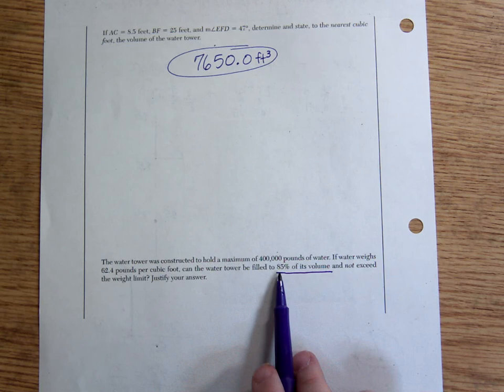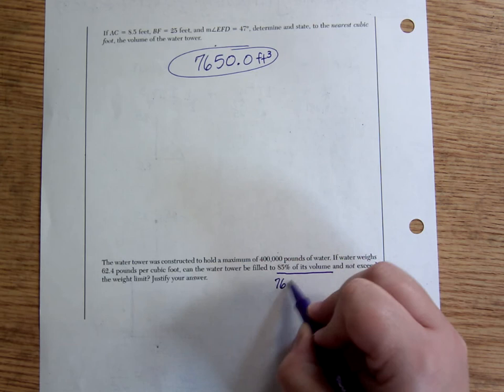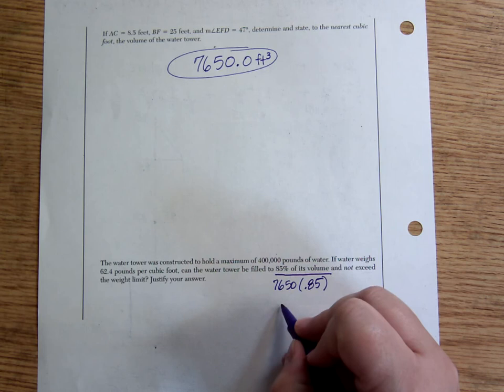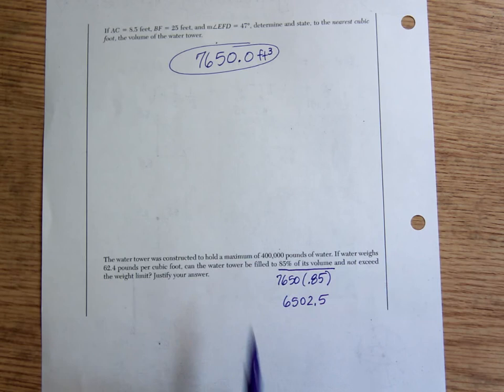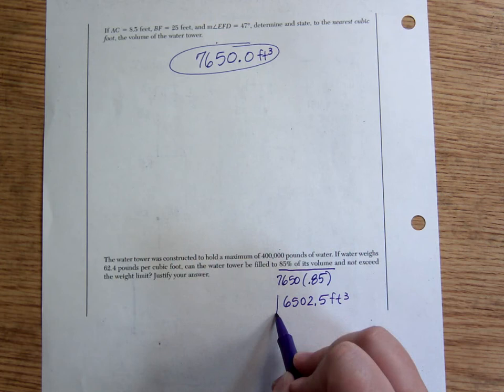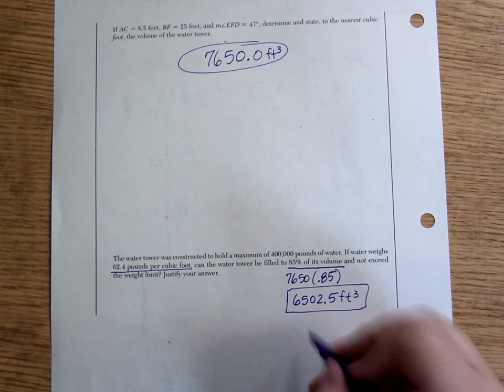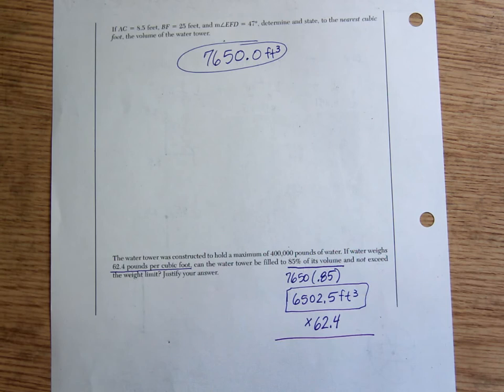I'm going to figure out what that is by doing 7650 times 0.85. 85% of its volume is 6502.5. We want to know if it can be filled with this much in terms of volume, this much water and not be too heavy. Well, that's the number of cubic feet. If I know that each one of those weighs 62.4 pounds, I'm going to multiply times 62.4 pounds and figure out how many pounds that is going to weigh.